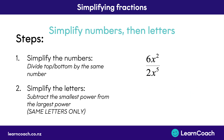Let's go through another example. Here we have 6x squared divided by 2x to the power of 5. The first thing we want to do is simplify the numbers. Here we have 6 over 2, which is the same as saying 6 divided by 2. 6 divided by 2 equals 3, so we can write 3 on the top of the fraction and get rid of the number on the bottom. And that's step 1 complete.